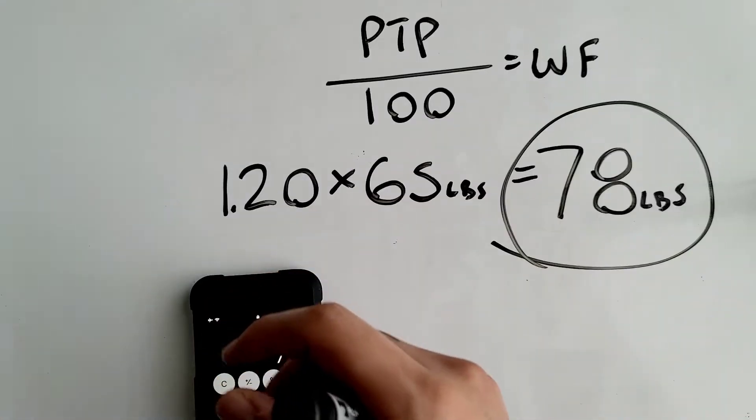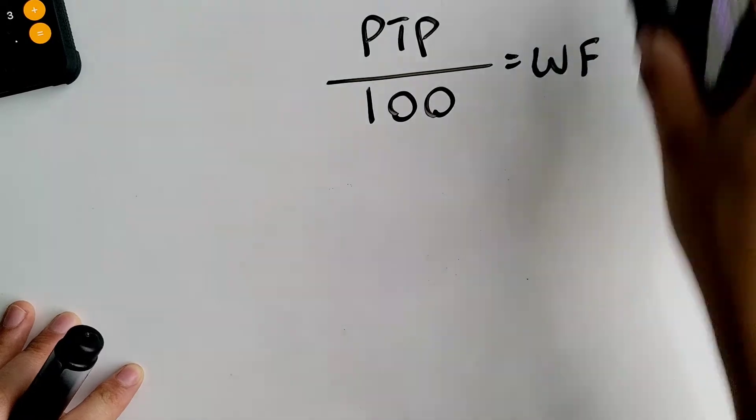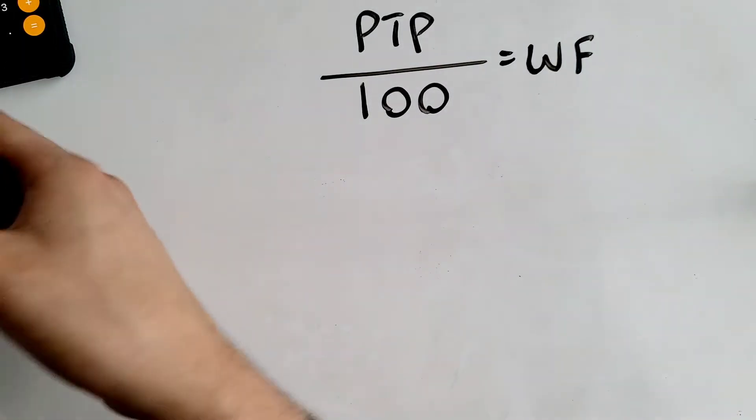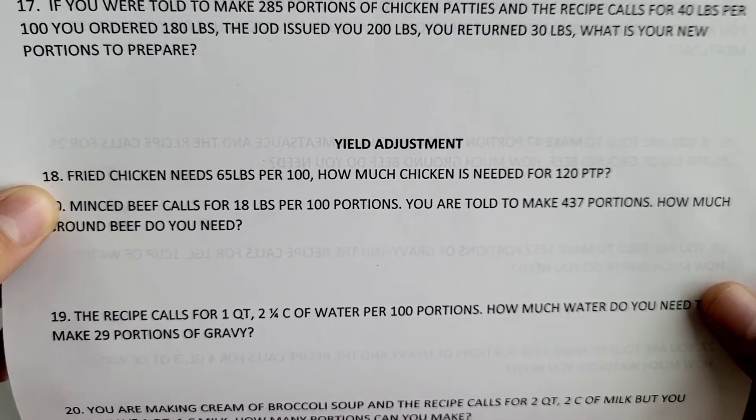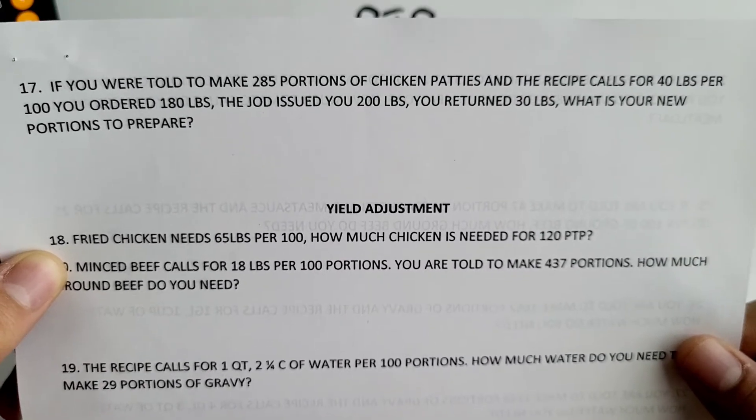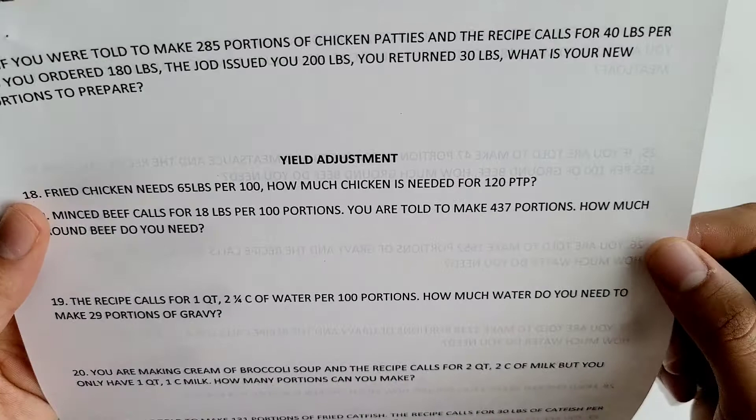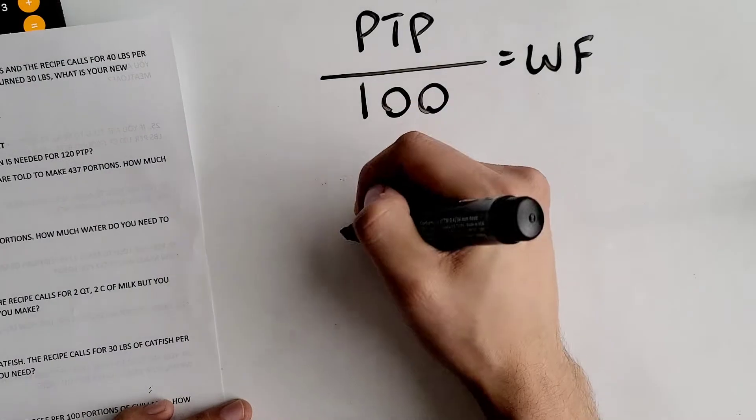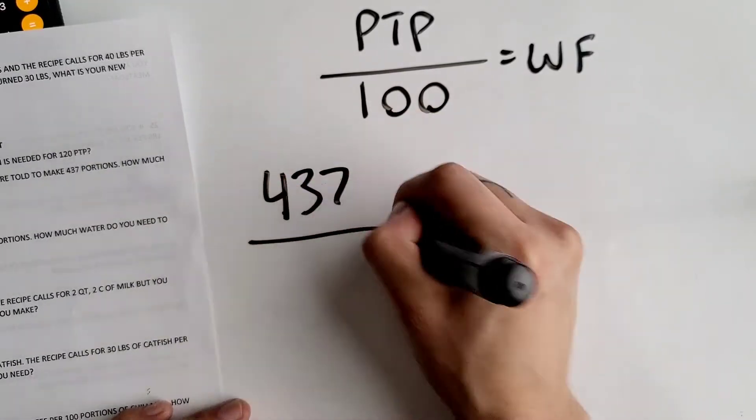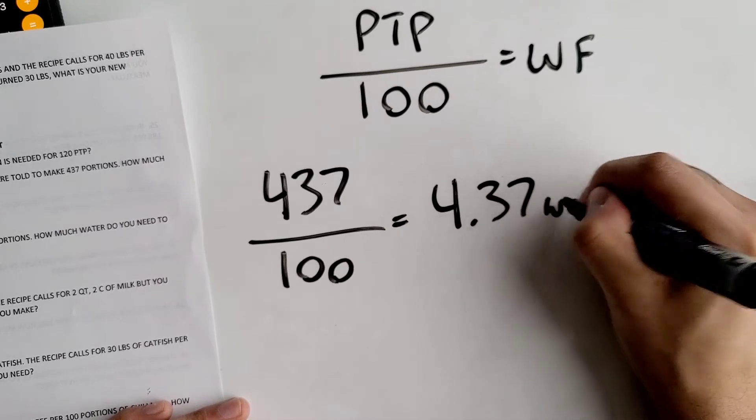Moving on to the next one. This says minced beef calls for 18 pounds per 100 portions. You are told to make 437 portions. How much ground beef do you need? Again, first find your working factor using this formula. You're told to make 437 portions, so that goes on top: 437 over 100 equals 4.37. This is your working factor.